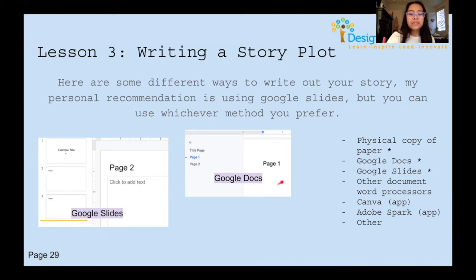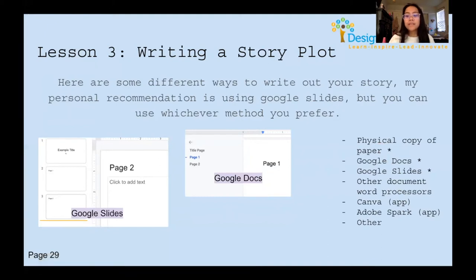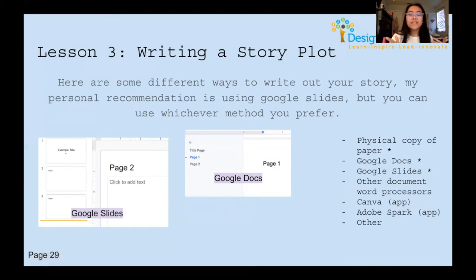Other resources you can use include physical paper, Google Docs, Google Slides, and different word processors. If you have a MacBook, you can use Pages. You can also use Canva and Adobe Spark, both of which are free apps. Remember to get your parents' approval before signing up for any of these, just in case there are fees involved.